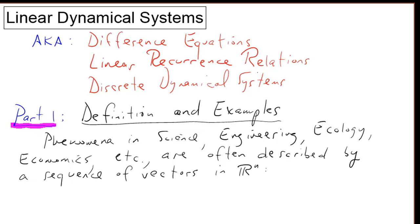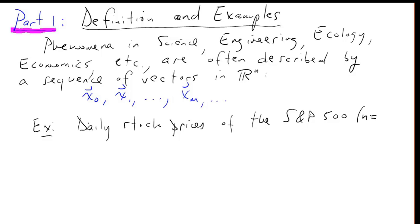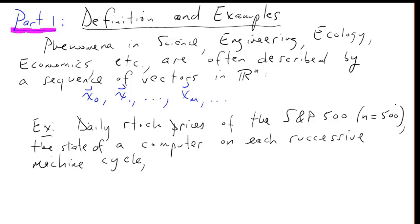Phenomena in science, engineering, ecology, economics, etc. are often described by a sequence of vectors in R^n. We'll write this sequence x_0, x_1, all the way down to x_m and beyond. For example, daily stock prices on the S&P 500, where n is equal to 500.